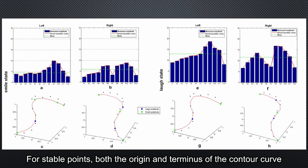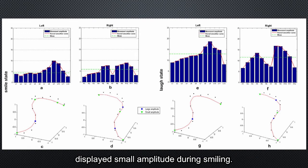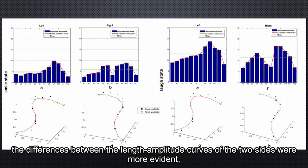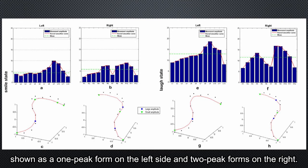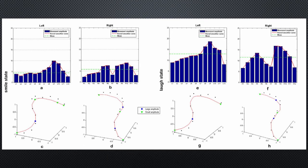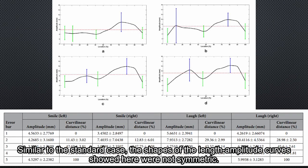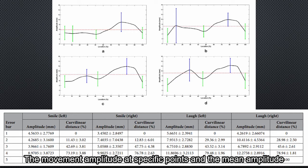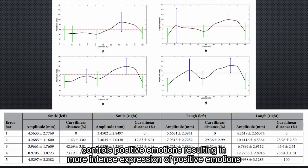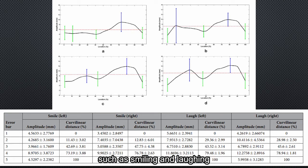For stable points, both the origins and terminals of the contour curves display more stability during smiling. For the laughing condition (figures E to H), the differences between the length of the two curves on the two sides were more evident, shown as one large peak on the left side and two large peaks on the right. However, the change pattern along the bilateral fitted curve is similar to the smiling condition. The movement of the two specific points and the means of the two were both larger on the right compared to the left side. This may be because the left hemisphere of the brain controls positive emotions, resulting in more instant impressions of positive emotions such as smiling and laughing on the right side of the face.